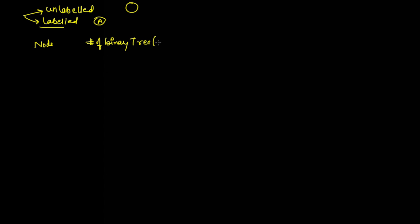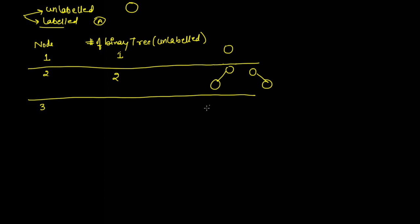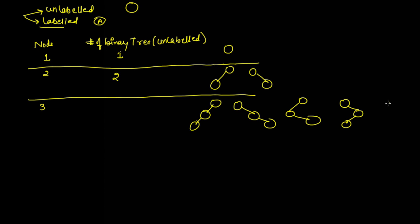Here I'll be talking about unlabeled binary trees. If you have one node, there is only one single binary tree possible. If we have two nodes, there are two different binary trees possible. If we have three nodes, there are five different binary trees possible.